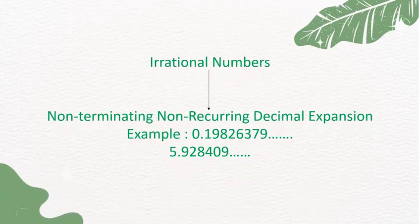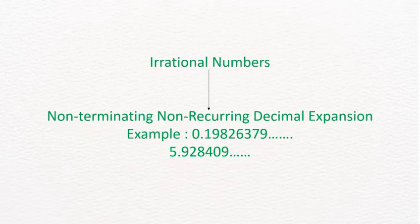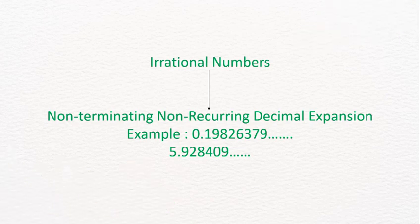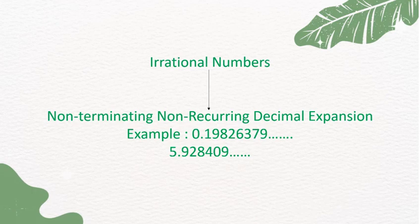Irrational Numbers are Non-Terminating, Non-Recurring Decimal Expansions. For example, 0.19826379... and 5.928409... are irrational numbers.